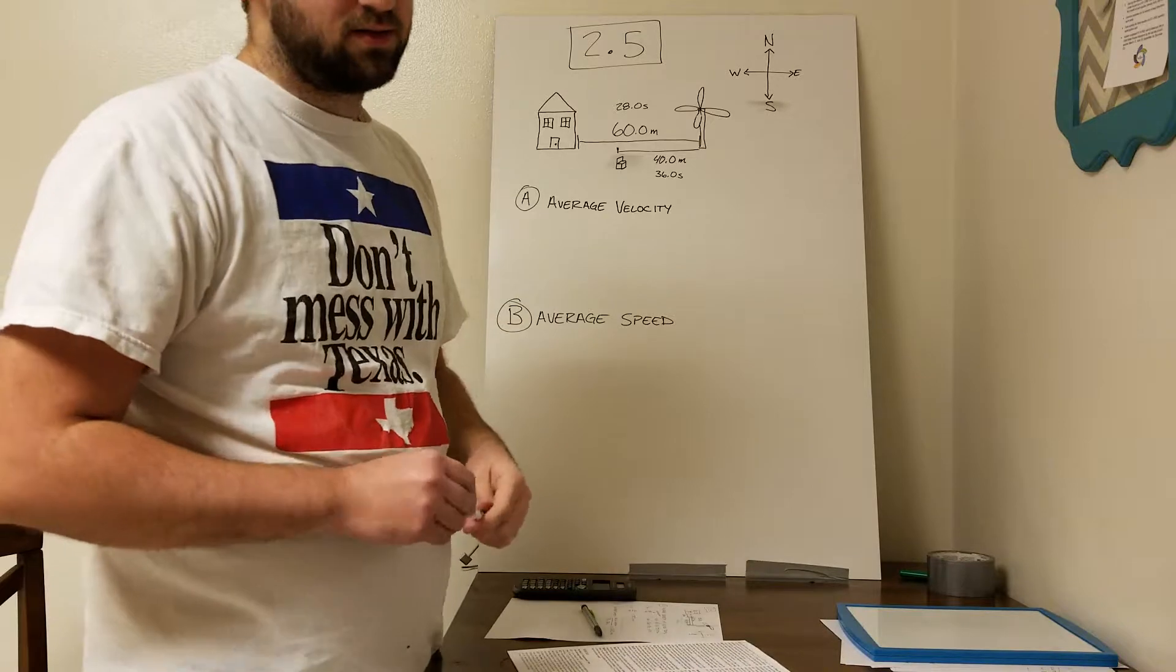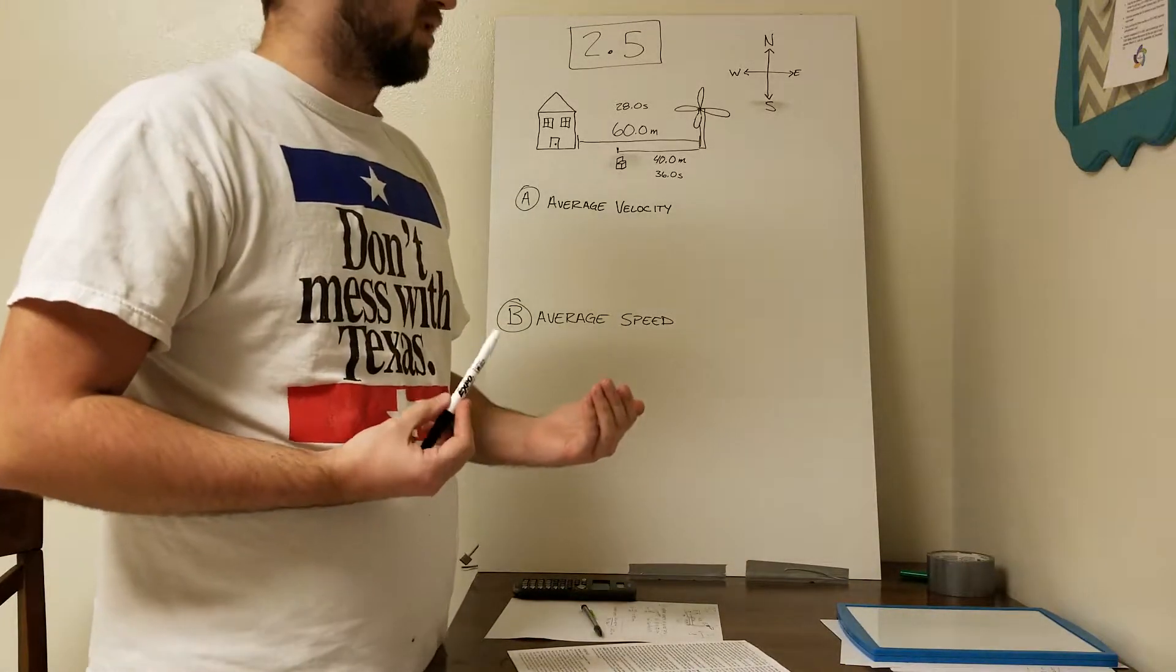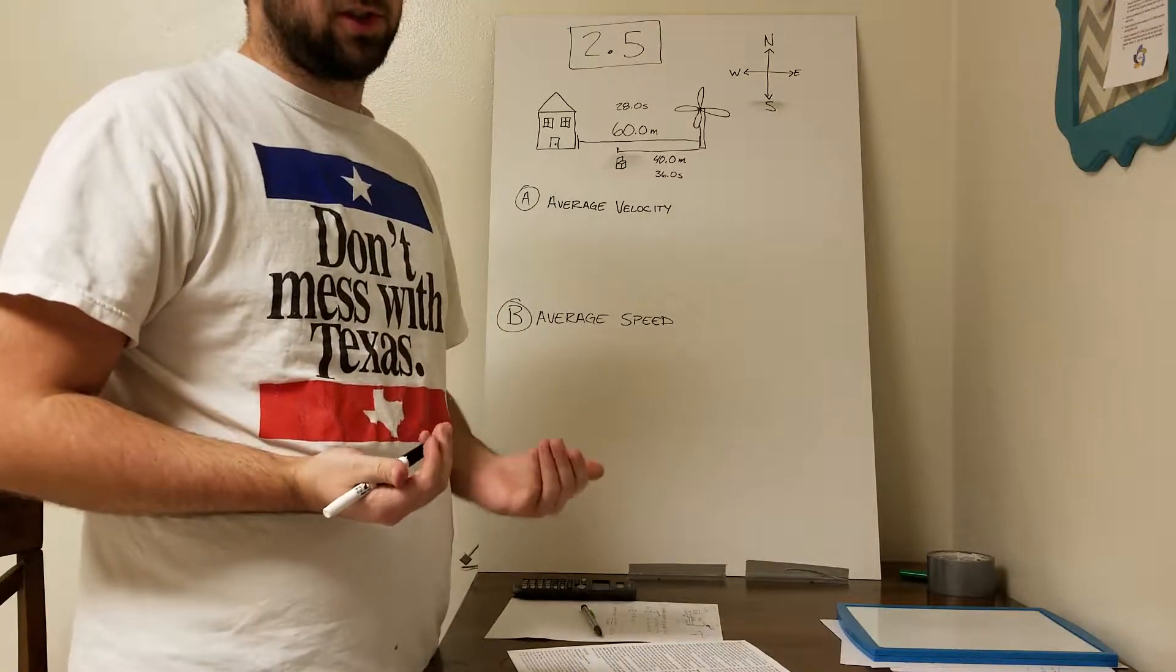How we find that is—all the average velocity is is the change in the displacement over the change in time.